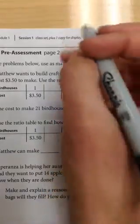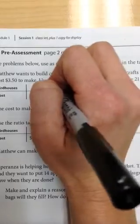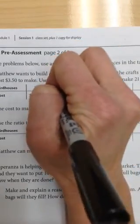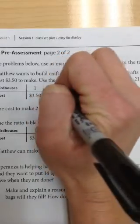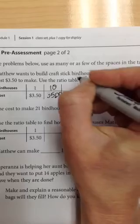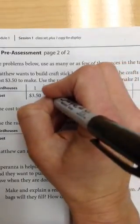So if 1 is $3.50, I'm going to go ahead and jump to 10. So 10 would be $35 because I just moved my decimal one spot over. It grew one place value, so $35.